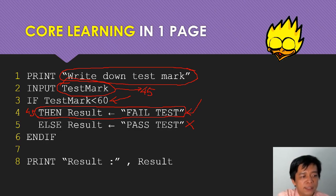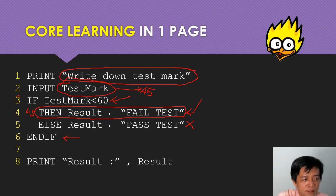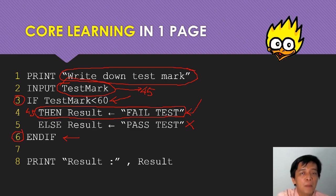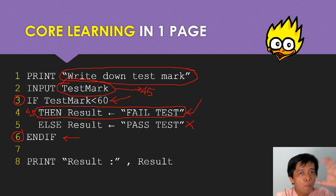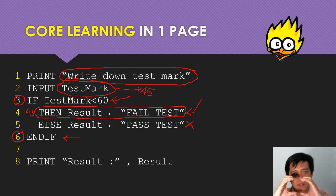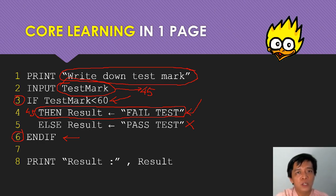This ENDIF is a closing statement. This is one set. If there is an IF statement, the closing line will be an ENDIF. It's like a pair, like brackets - you have an open bracket, you will have a closed bracket. So line 4 and line 5 are in between.